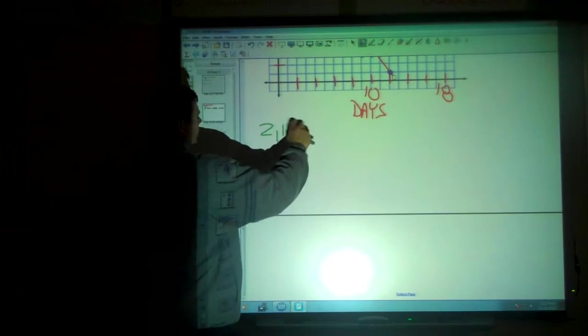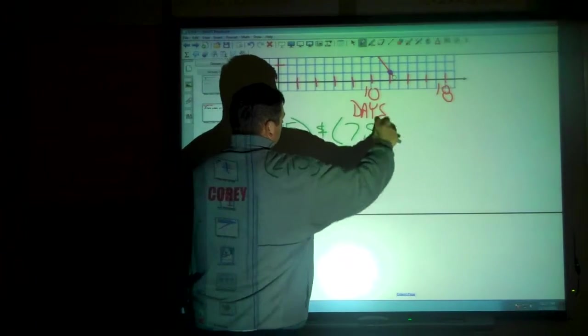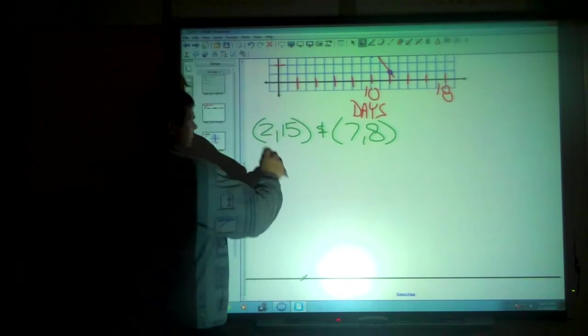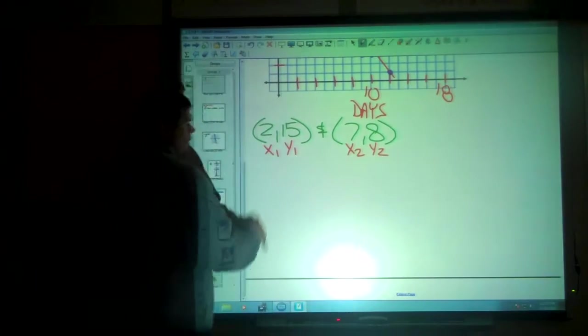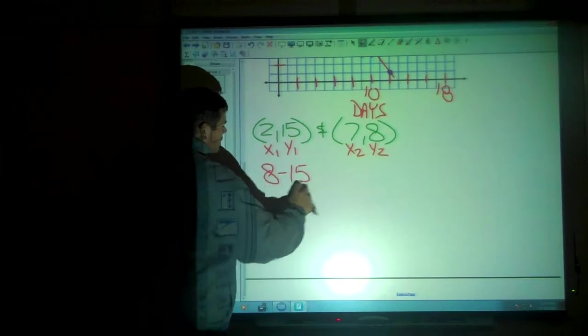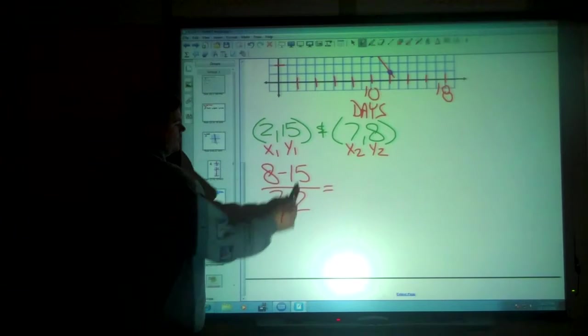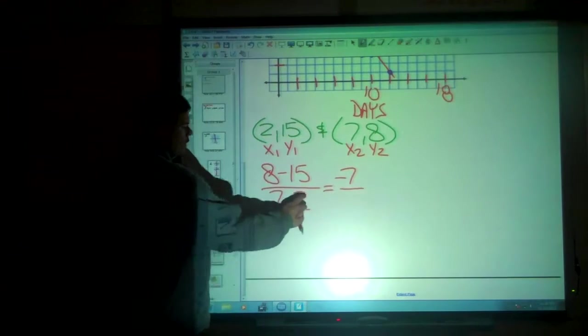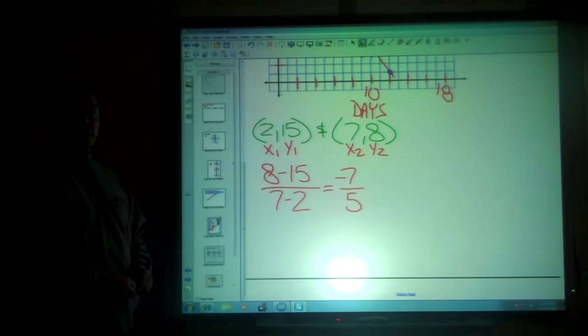So 2, 15 and 7, 8. X sub 1, Y sub 1. X sub 2, Y sub 2. I know I'm going to go 8 minus 15 over 7 minus 2. I'm going to get 8 minus 15 is equal to negative 7 over 5. That's my slope.